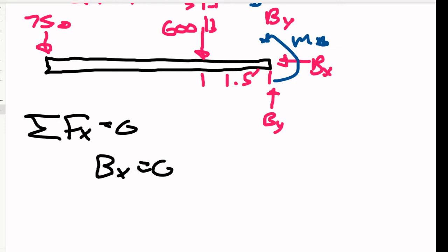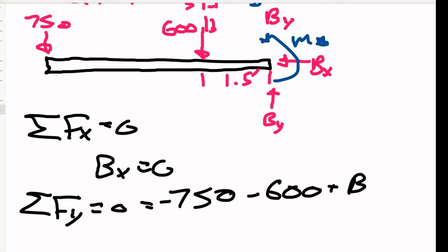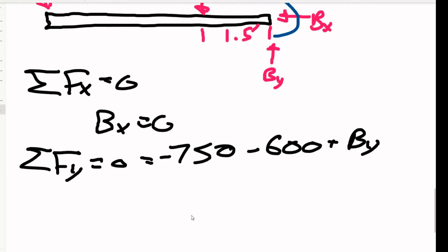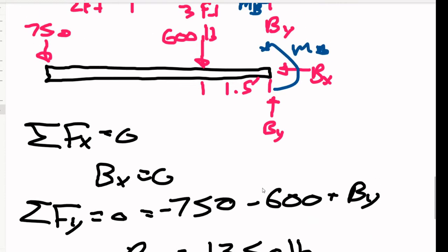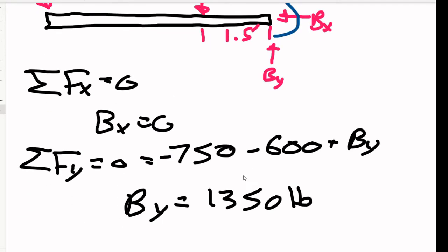Sum of the forces in the y-direction. That one's also fairly easy. That's equal to zero, which is equal to negative 750 minus 600 plus By. That's all in pounds. Which gives us By is equal to 1350 pounds. Almost looked like a B, but let's do that again. There we go.